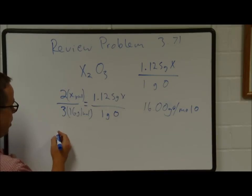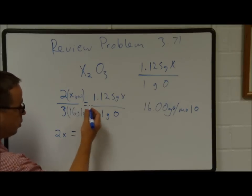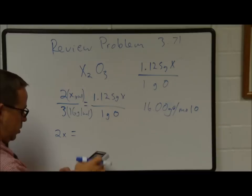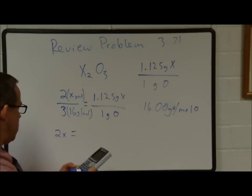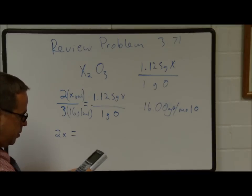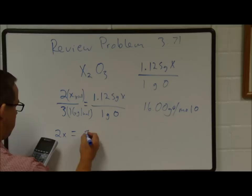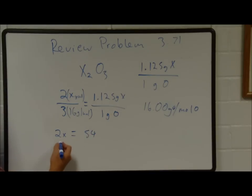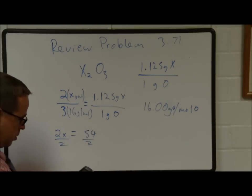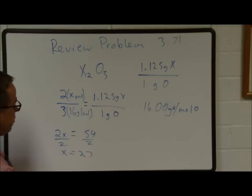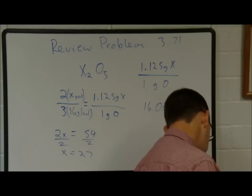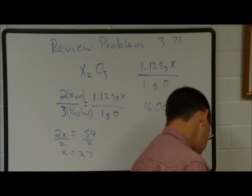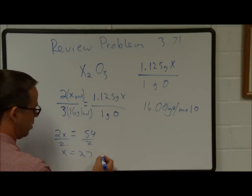1 times 2x is 2x by cross-multiplying, and that equals 1.125 grams of X times 3 times 16. That's 54. So 2x equals 54. Divide both sides by 2 and x equals 27. If we look on the periodic table for what atom has the mass of 27, we find 26.98 is aluminum. So X equals aluminum, and this compound is Al2O3.